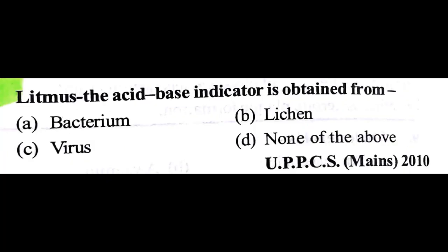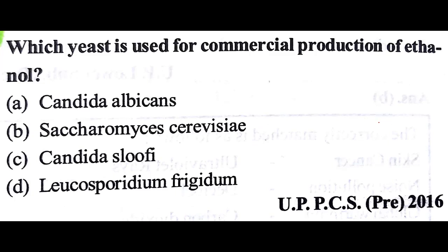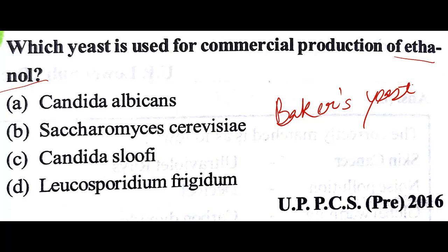Litmus, the acid-base indicator, is obtained from — the answer is B: lichen. This is a very important question that was asked in Rajasthan prelims 2018. Which yeast is used for commercial production of ethanol? Baker's yeast is used for the commercial production of ethanol, and its scientific name is Saccharomyces cerevisiae.